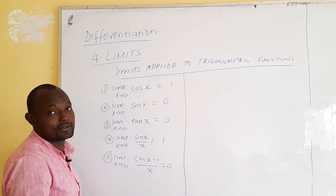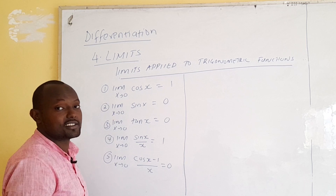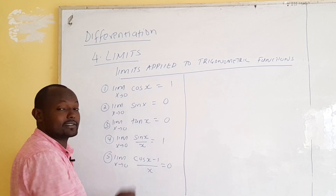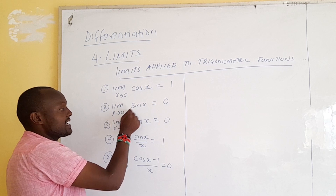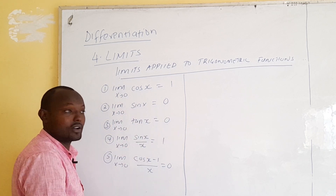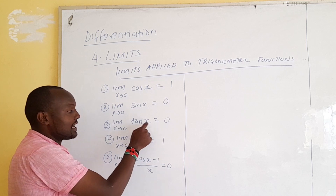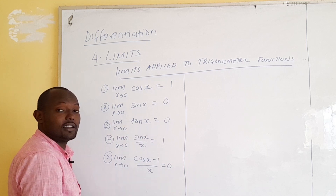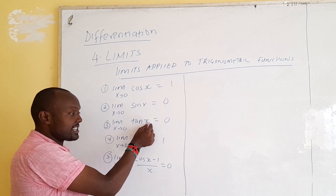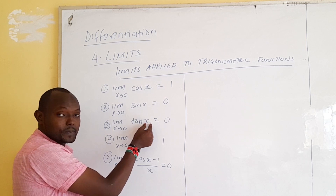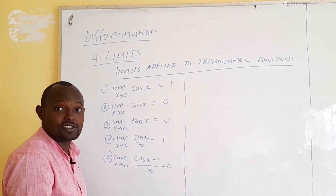The same case applies to sine. If you have the limit as x approaches 0 of sin(x), then sin(0) = 0. Similarly, if you have the limit as x approaches 0 of tan(x), by direct substitution tan(0) = 0.